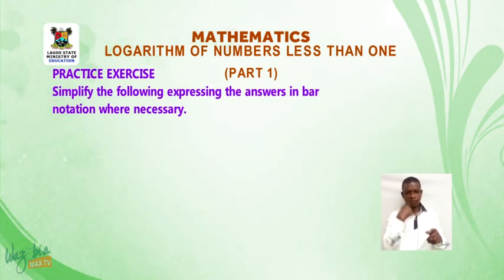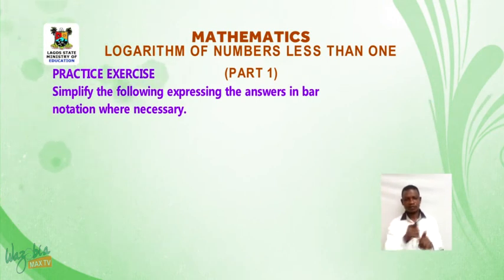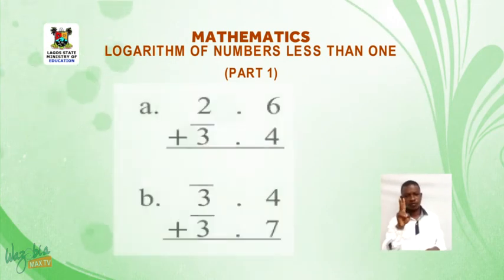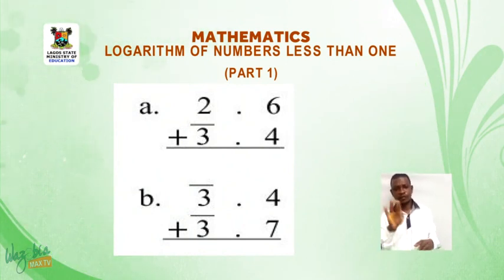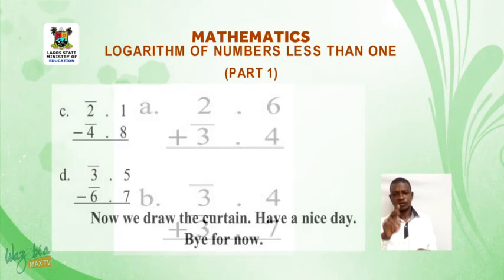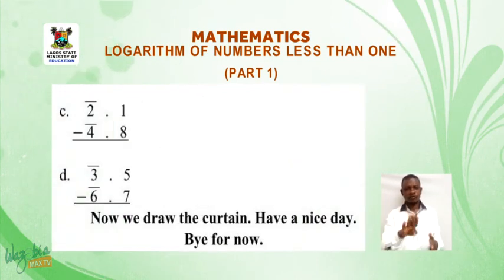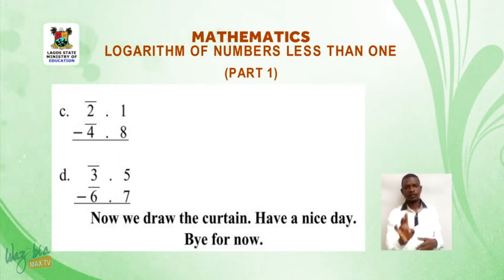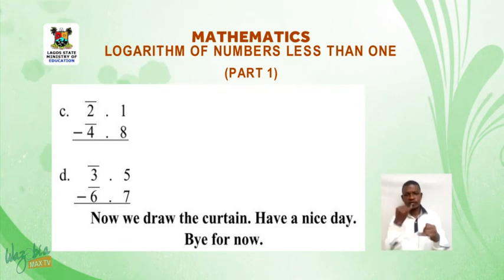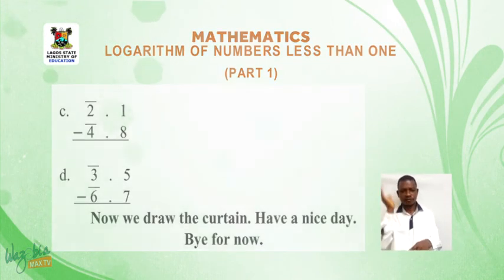Practice the size. Simplify the following, expressing the answers in bar notation when necessary: a) 2.6 plus bar 3.4, b) bar 3.4 plus bar 3.7, c) bar 2.1 minus bar 4.8, d) bar 3.5 minus bar 6.7. Here we draw the curtain. Have a nice day, bye for now.